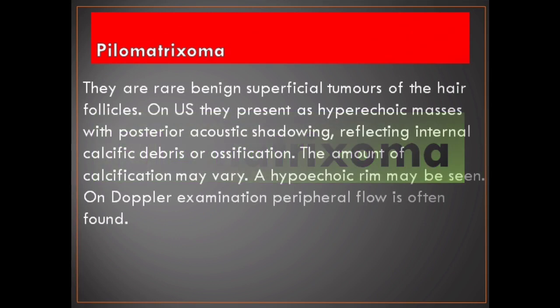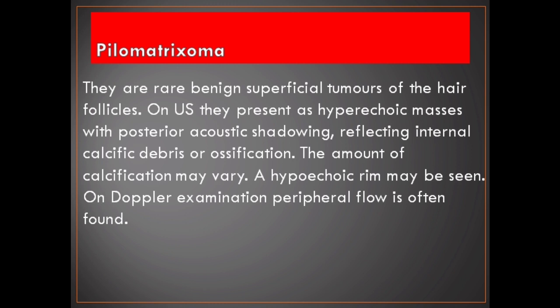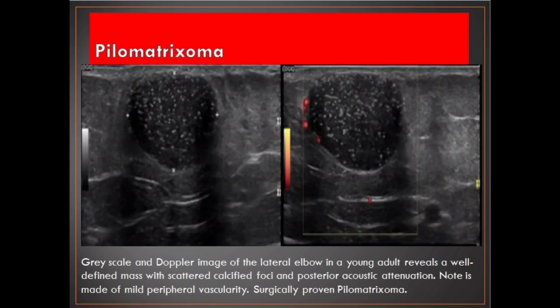Pilomatrixoma. They are rare benign superficial tumors of the hair follicles. On ultrasound they present as hyperechoic masses with posterior acoustic shadowing, reflecting internal calcific debris or ossification. The amount of calcification may vary. A hypoechoic rim may be seen. On Doppler examination, peripheral flow is often found. Grayscale and Doppler image of the lateral elbow in a young adult reveals a well-defined mass with scattered calcified foci and posterior acoustic attenuation, with mild peripheral vascularity — surgically proven pilomatrixoma.